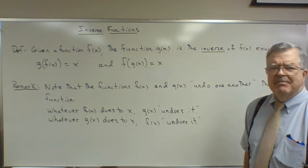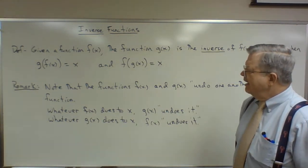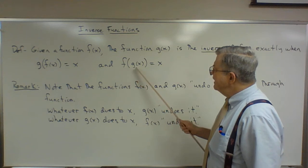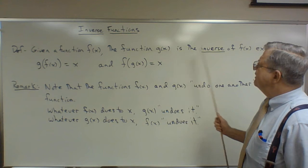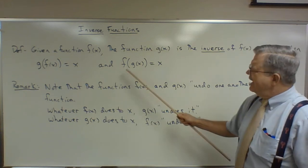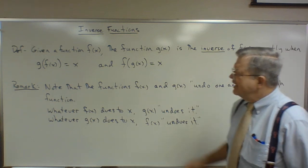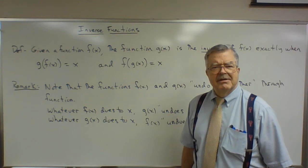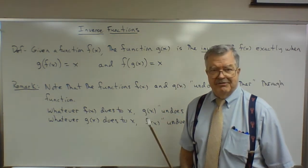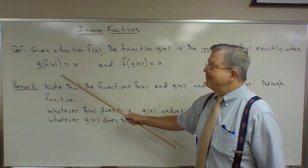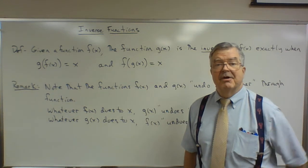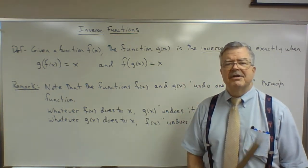Maybe one observation we can make before we look at an example: g evaluated at f of x equals x, and f evaluated at g of x equals x. So that means g of x is the inverse of f of x. But if we look at that, we might say, well, f evaluated at g of x equals x and g evaluated at f of x equals x — so wouldn't that also mean that f is the inverse of g of x? If g is the inverse of f of x, then f of x is the inverse of g of x also. Functions and inverses come in pairs, kind of like being married.